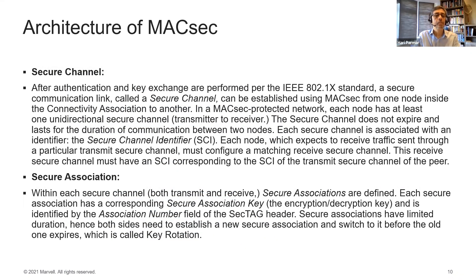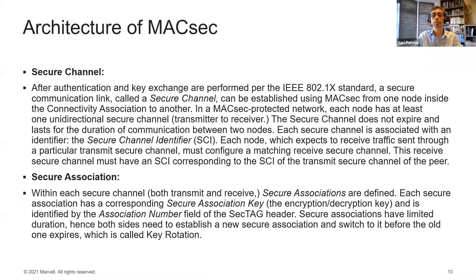What is a secure channel? After authentication and key exchange are performed per IEEE 802.1X standard, a secure communication link called a secure channel can be established using MacSec from one node inside the connectivity association to another. In a MacSec-protected network, each node has at least one unidirectional secure channel. The secure channel does not expire and lasts for the duration of the communication between the two nodes. Each secure channel is associated with a secure channel identifier (SCI), and each node expecting to receive traffic must be configured with a matching receive secure channel whose SCI corresponds to the SCI of the transmitted secure channel of the peer.